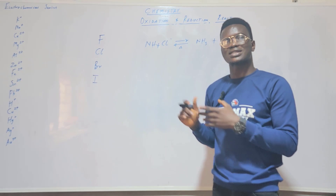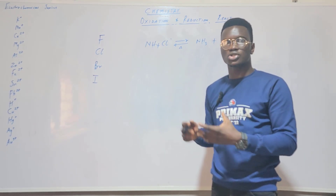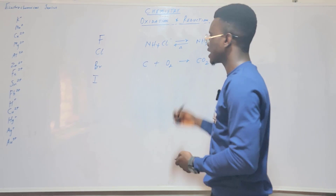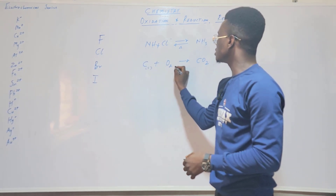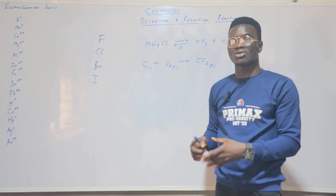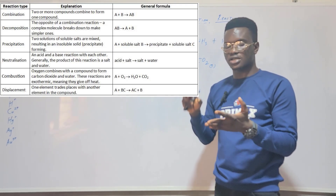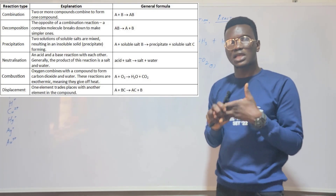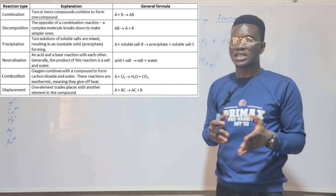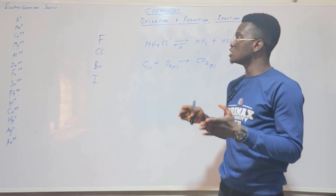The major reaction type we'll focus on is oxidation-reduction. Aside from that, when a substance burns completely in oxygen, that is a combustion reaction. For example, carbon burning in oxygen gives carbon dioxide (CO₂). So to summarize: today we covered displacement reaction, decomposition reaction, combination reaction, thermal dissociation, combustion, and neutralization (acid + base → salt + water).